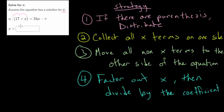So this is our main strategy. Distribute the parentheses, collect all the x terms on one side, move everything else that's not an x to the other side, then factor it out and then divide by that coefficient. So let's put this into practice. So the first step is to distribute here. So you get 17n plus nx equals 34x minus r. So we distributed.